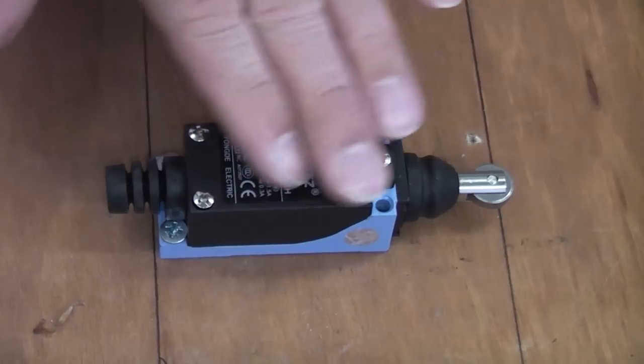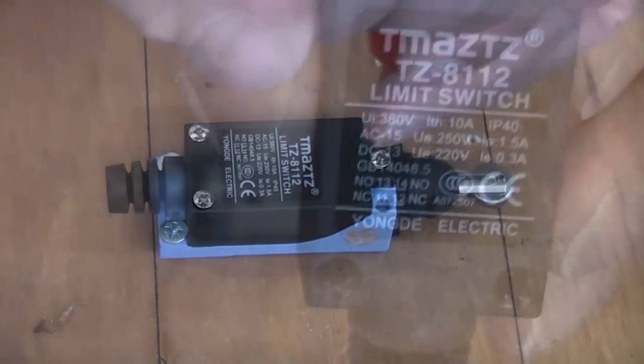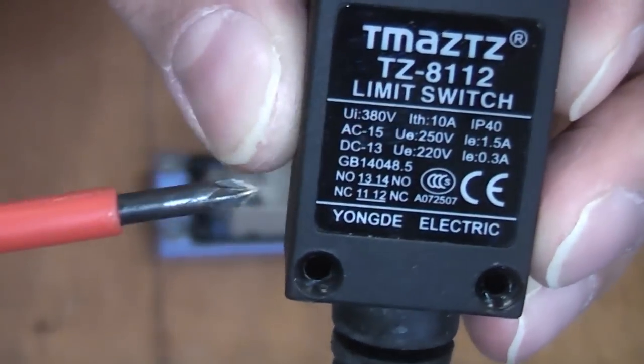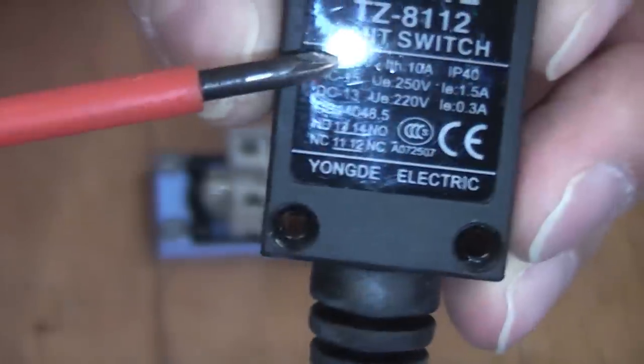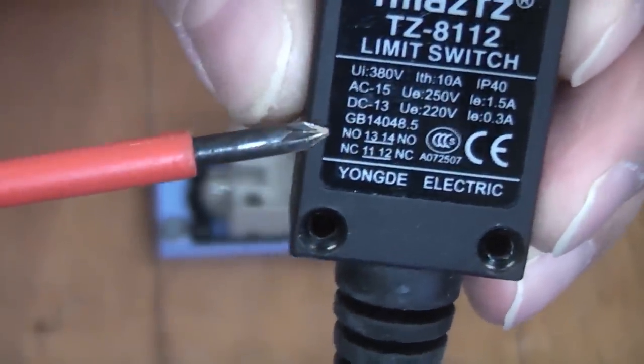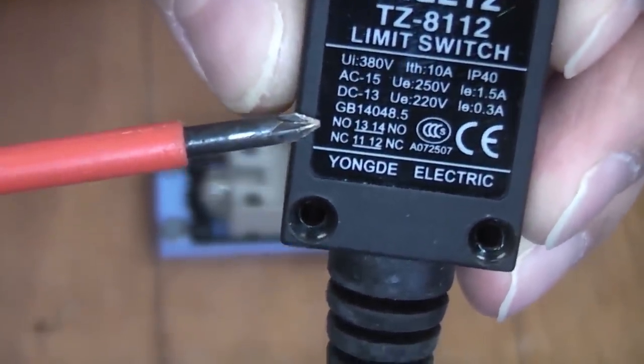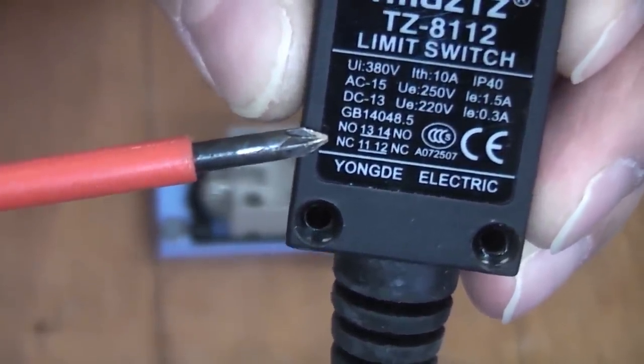We're now going to take the cover off this and have a quick look inside. If we just look at the cover you can see it says that it's a limit switch. It's got the voltage on there, the maximum amperage, and also it tells you it's got a normally open contact and normally closed contacts within this switch.